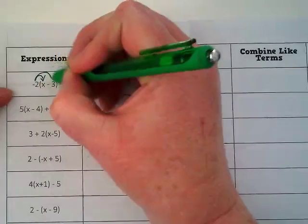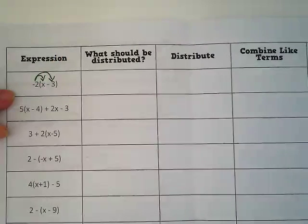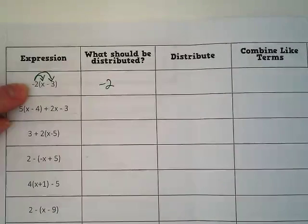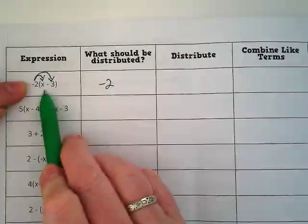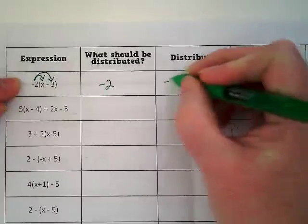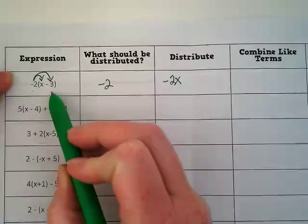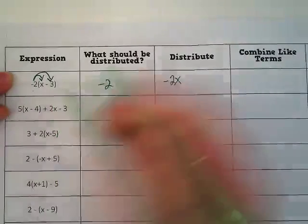In this case, it's negative 2. In our second column, we are asked what should be distributed and it should be the negative 2. In the third column, we do the distribution. What is negative 2 times x? Negative 2x. And negative 2 times negative 3? Positive 6.